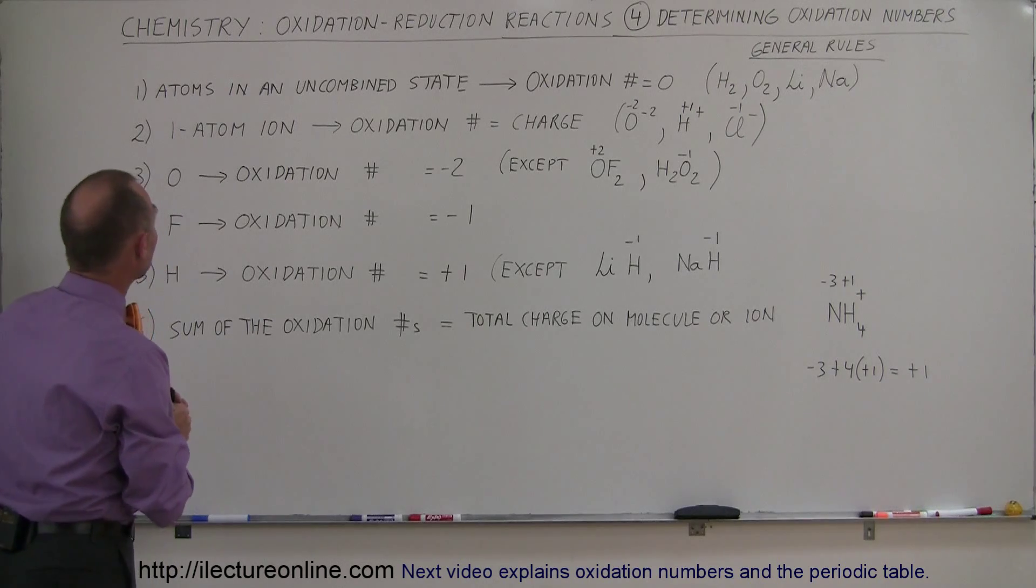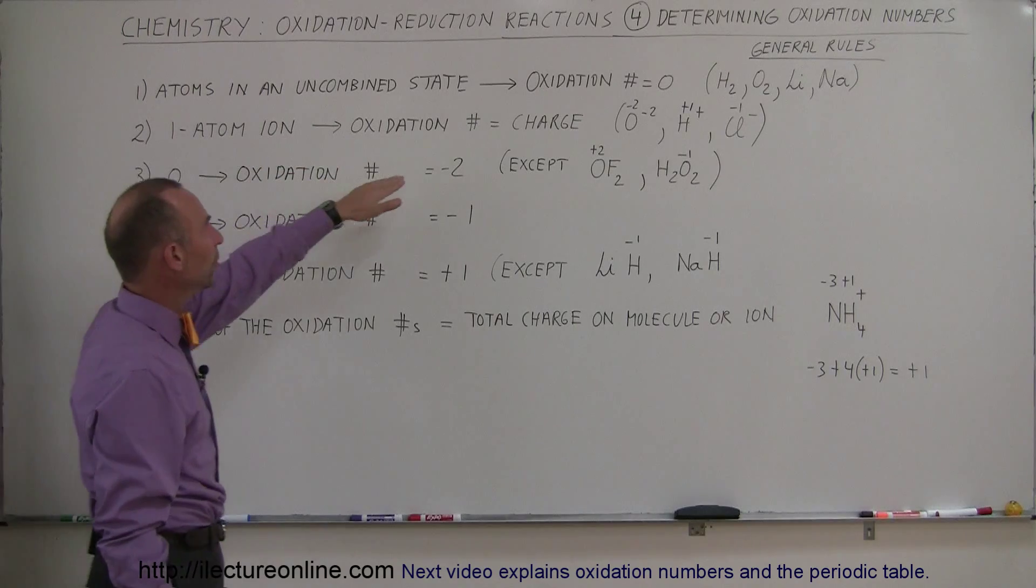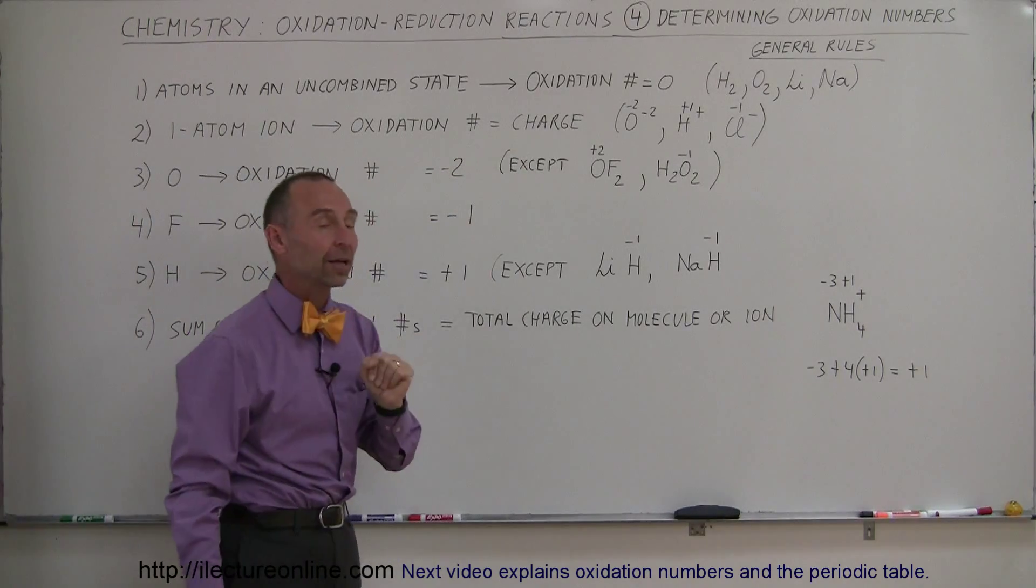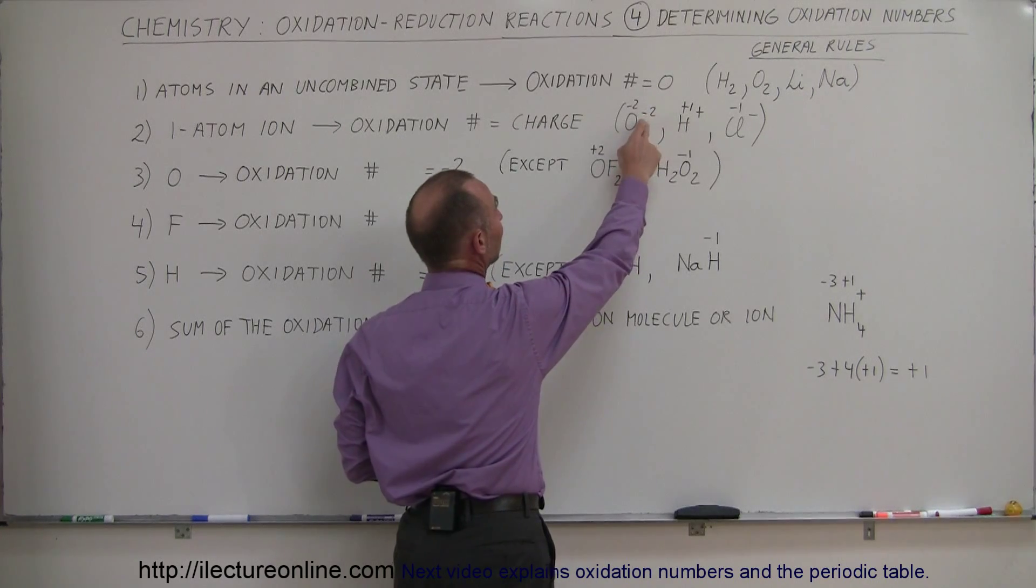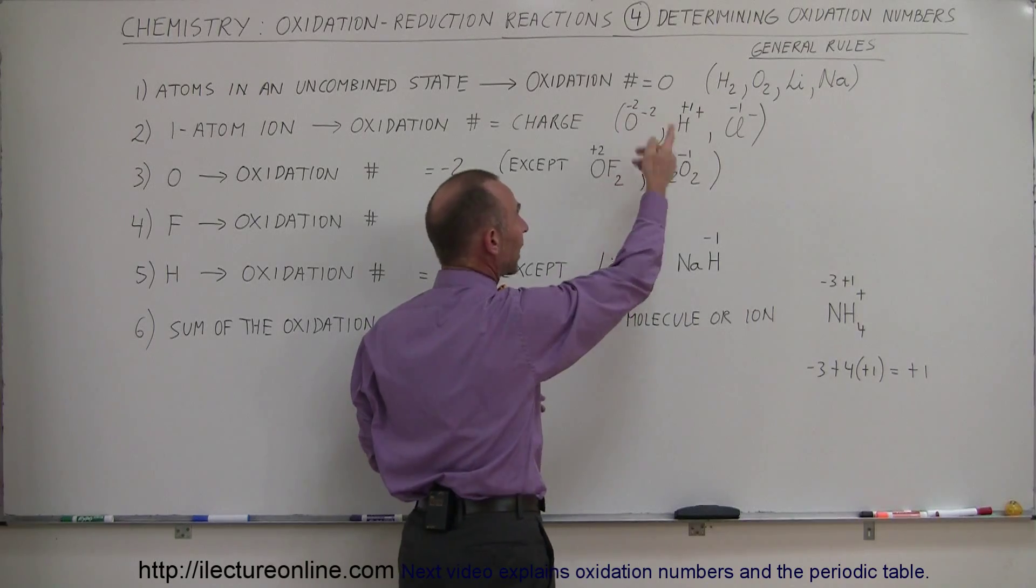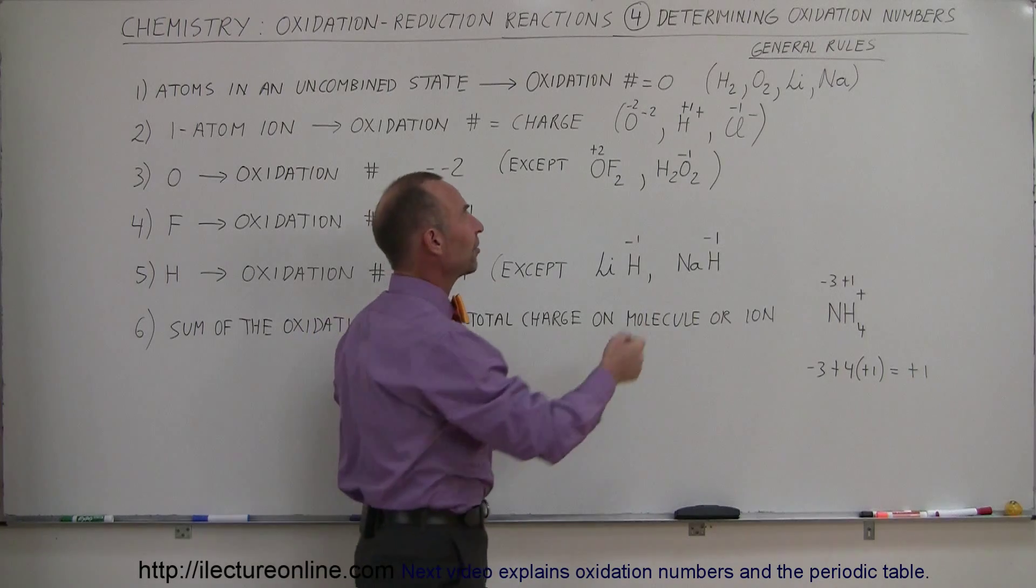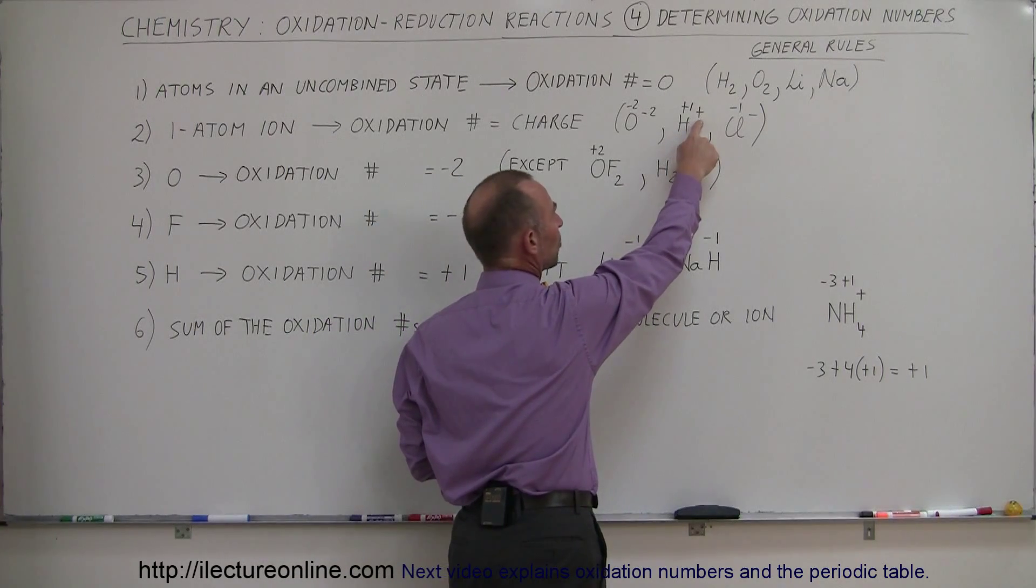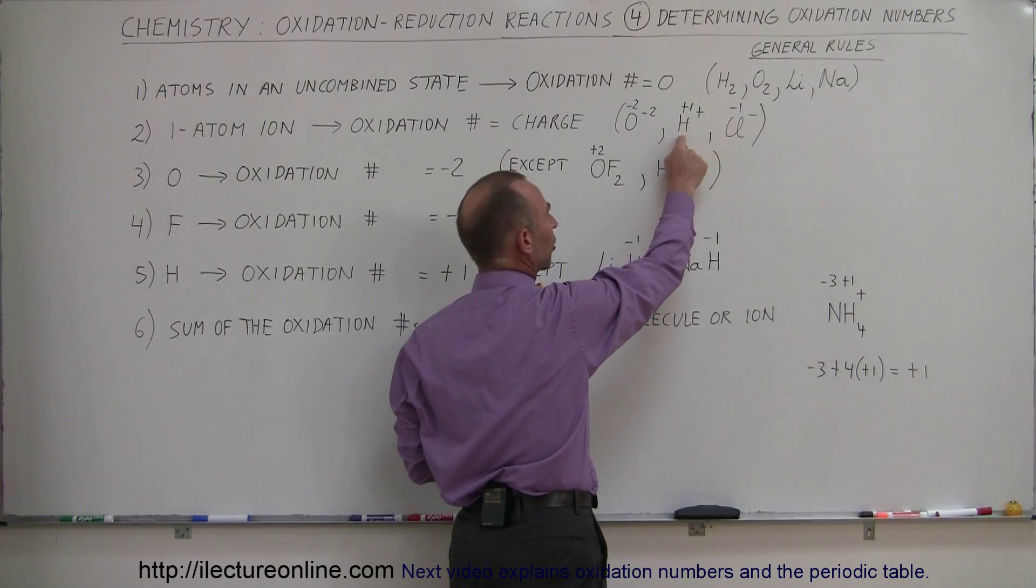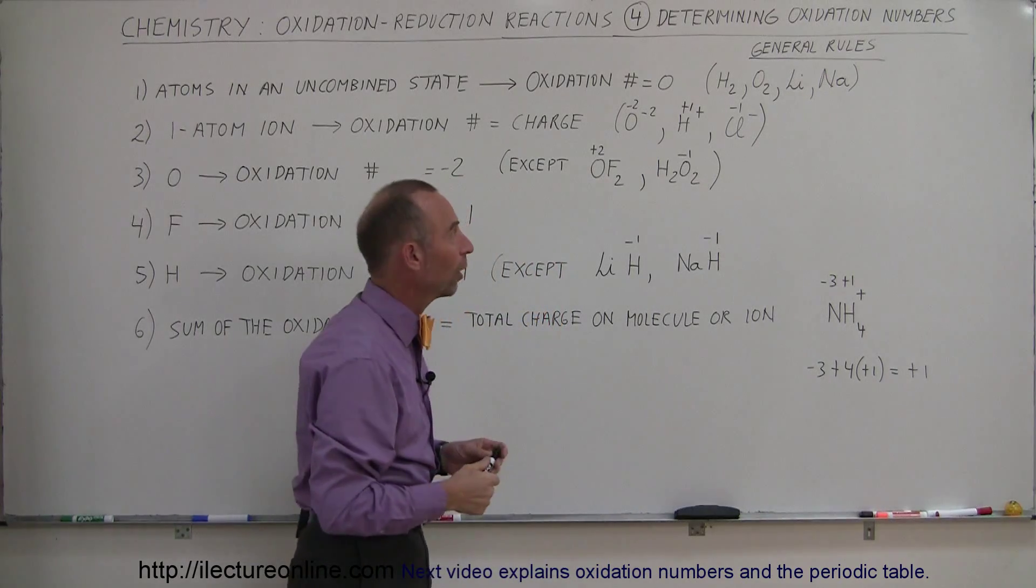Secondly, when we have a single one atom ion, the oxidation number is always equal to the charge of that ion. For example, when we have a single oxygen ion and it has gained two extra electrons, the charge on the ion will be minus two and that will also be the oxidation number. When we have a single hydrogen atom, or in this case an ion, with one electron removed, then we know that the charge on the hydrogen ion is a plus charge and that's also then the oxidation number, plus one.